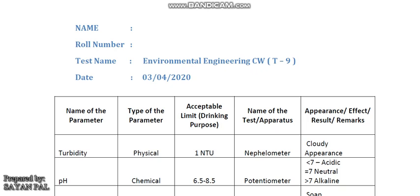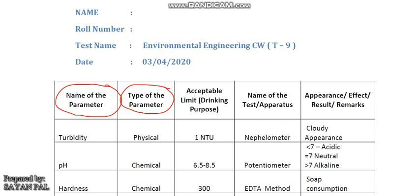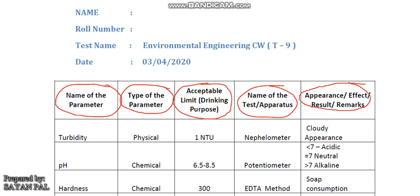Dear students, in this lecture we will study some important water quality parameters. First the name, then type of the parameter — that means whether physical, chemical or biological — then acceptable limit for drinking purpose. Then name of the test or apparatus, then its appearance or effect or result and remarks.